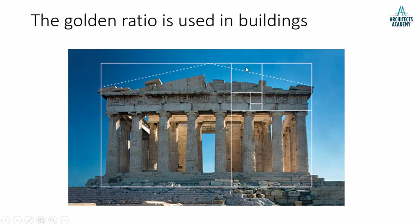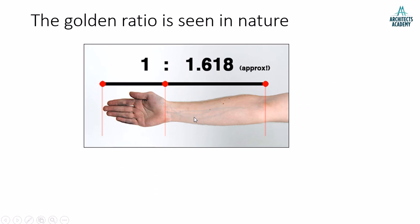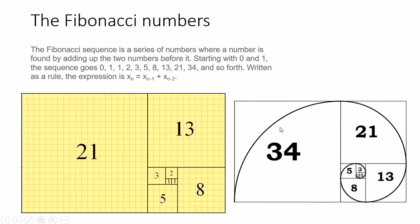The golden ratio was also used by ancient architects in designing buildings. You can see this in the Parthenon, where the golden ratio has been applied. The golden ratio is also seen in the human figure — for example, the relationship of the hand to the arm follows a similar ratio of 1 to 1.618.